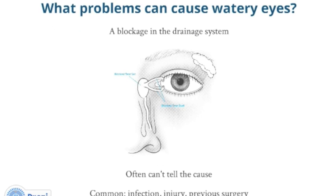What problems can cause watery eyes? Watery eyes can be caused by blockage in the drainage system, but we often cannot tell what caused the blockage. Infection is a common reason though. When blockage is caused by an injury or previous surgery, there is usually a clear story to connect the two events.